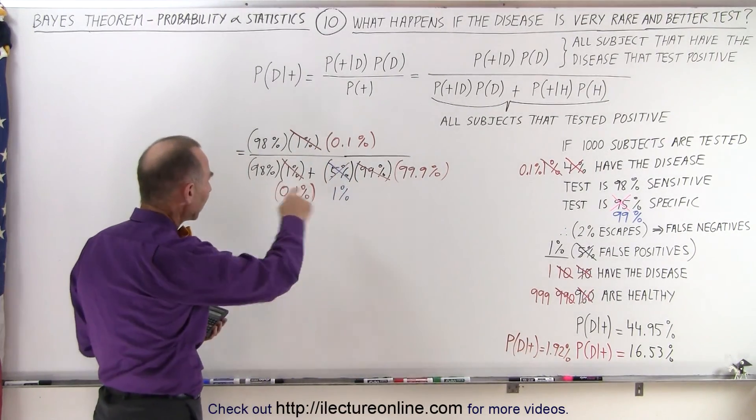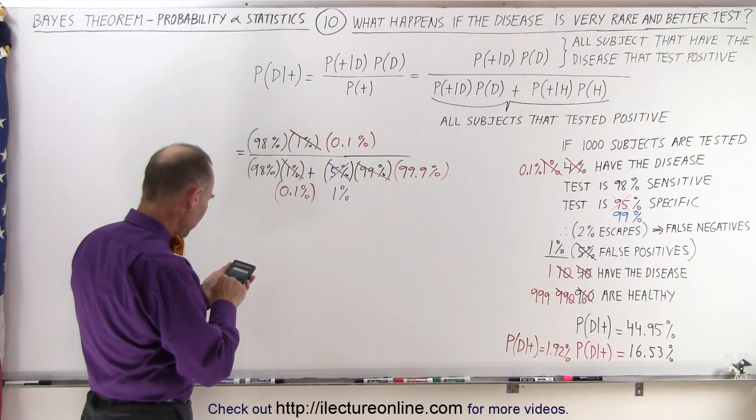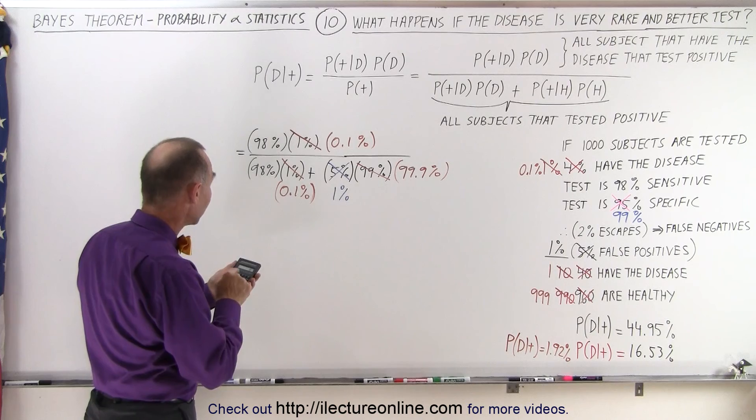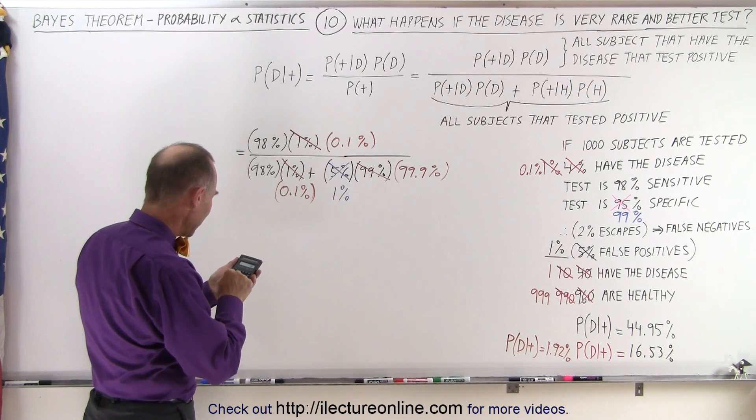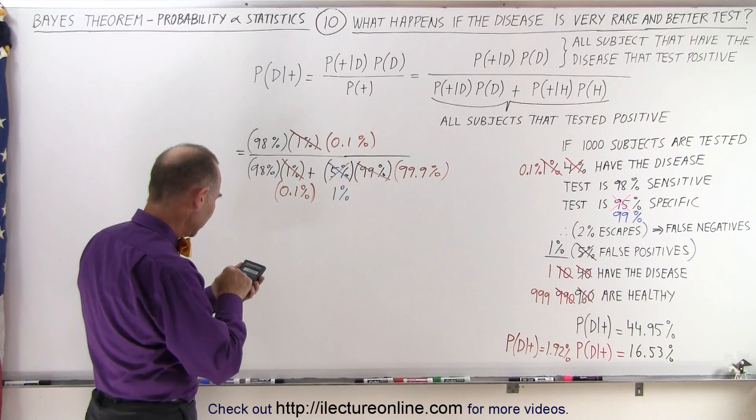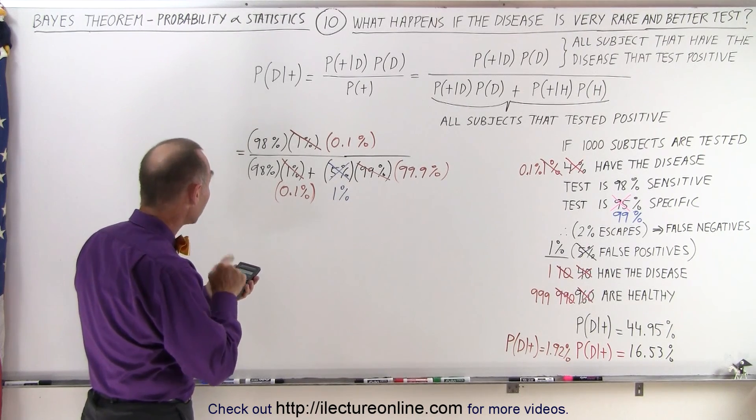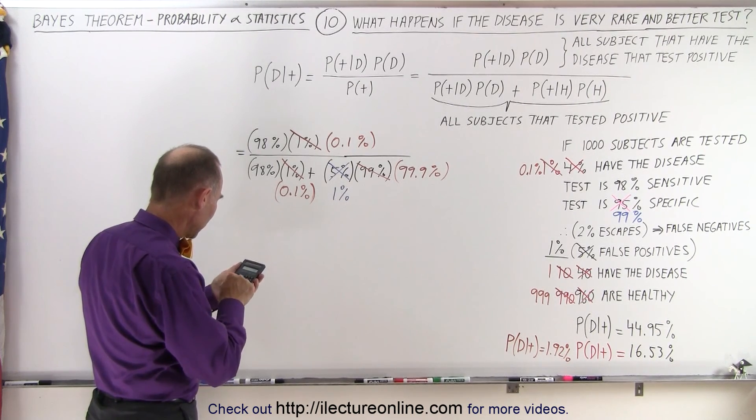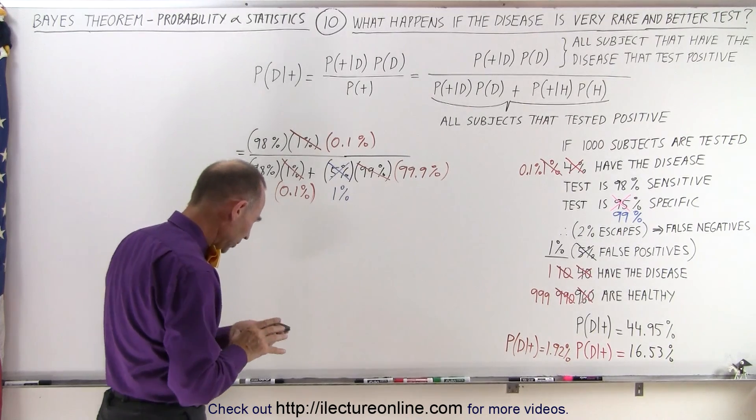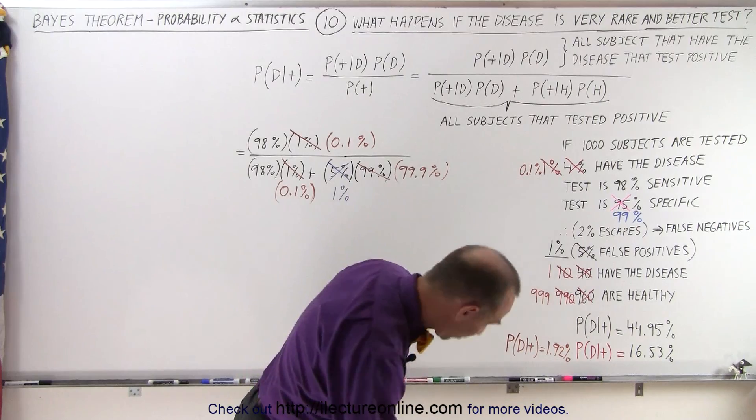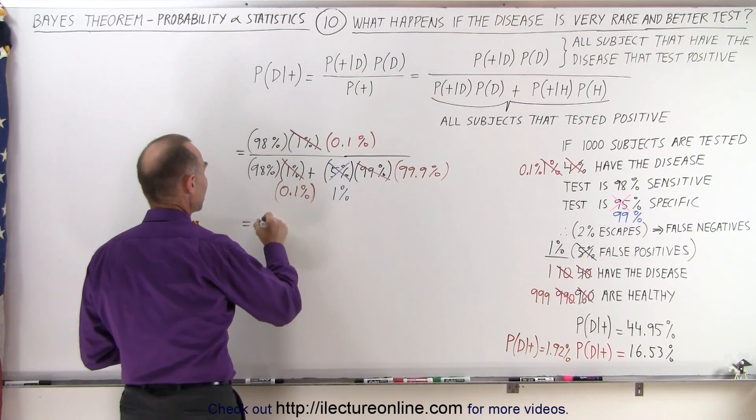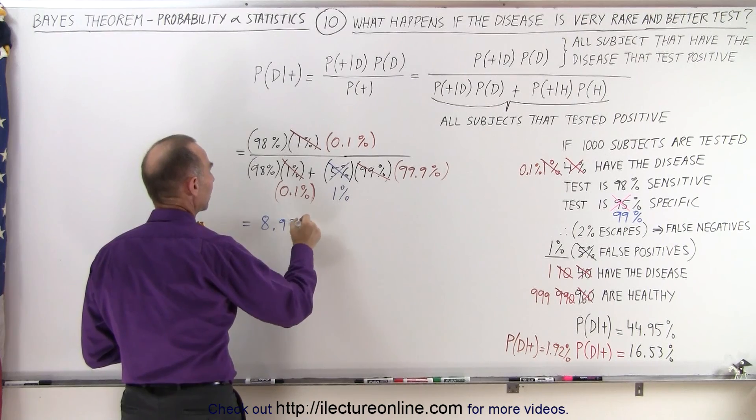All right, so taking the denominator, we go 0.98 times 0.001 plus 0.999 times 0.01, take that to the numerator and multiply that times 0.98 and times 0.001 equals, and now we're at 8.93 percent.